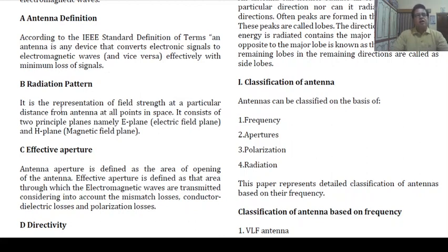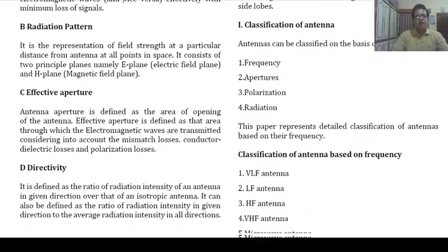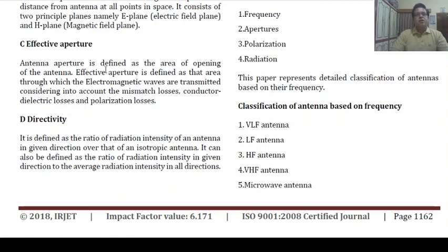Radiation pattern: It is a representation of field strength at a particular distance from the antenna at all points in space. It consists of two principal planes — the E-plane (electric field plane) and the H-plane (magnetic field plane). Effective aperture: Antenna aperture is defined as the area of opening of the antenna. Effective aperture is that area through which electromagnetic waves are transmitted, taking into account mismatch loss, conductor and dielectric losses, and polarization losses.